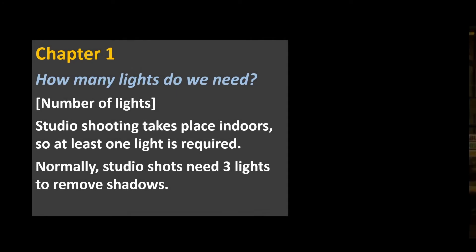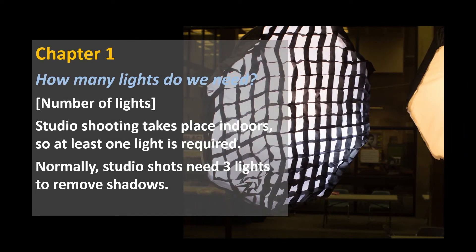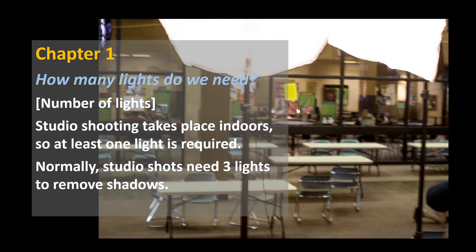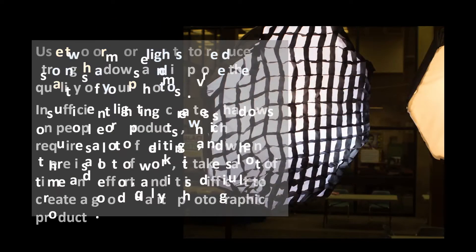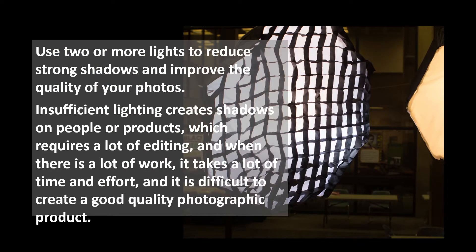Chapter 1: Number of Lights. Studio shooting takes place indoors, so at least one light is required. Normally, studio shots need three lights to remove shadows. Use two or more lights to reduce strong shadows and improve the quality of your photos. Insufficient lighting creates shadows on people or products, which requires a lot of editing, and it takes a lot of time and effort, making it difficult to create a good quality photographic product.